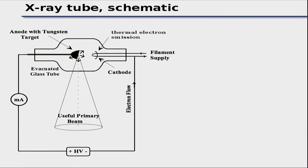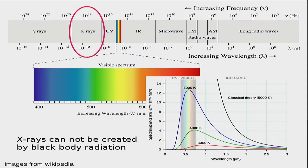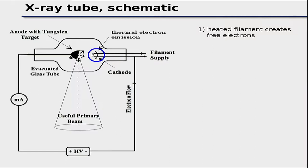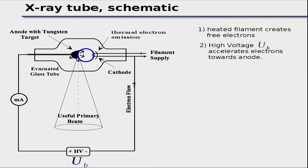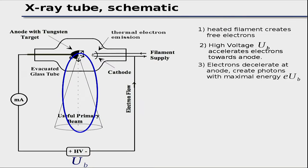About 100 years ago, Röntgen invented the X-ray tube. You have an evacuated glass tube with a heated filament that emits electrons. A high-voltage supply accelerates those electrons toward the anode. They acquire kinetic energy proportional to their charge times the voltage. When they hit the anode, they create X-rays, which we then use to illuminate our samples.